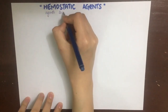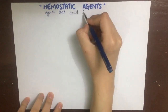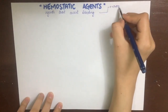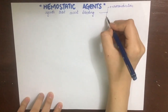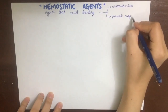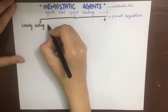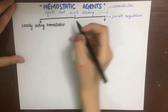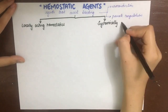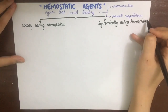Hemostatic agents are agents that arrest bleeding via vasoconstriction or by promoting coagulation of the blood. The hemostatic agents can be of two types: those that act locally and others which act systemically.